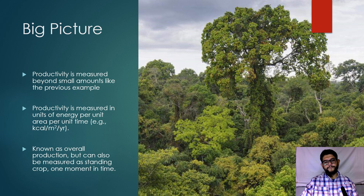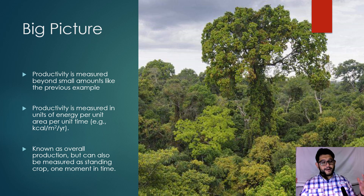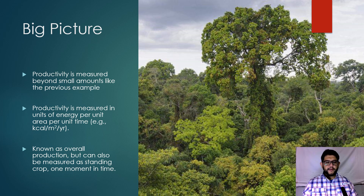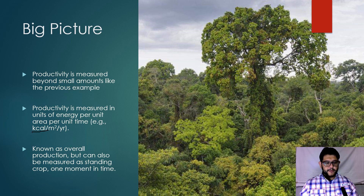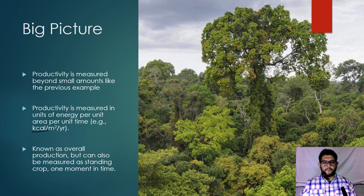What does this have to do with productivity? You can measure these small amounts in a lab and then extrapolate those calculations into the bigger picture. That's how we can figure out the productivity of an entire forest, coral reef, or seagrass bed — measured in kilocalories per meter squared per year. This is usually measured as overall production, but some scientists also look at it as the standing crop, measuring biomass at a certain moment in time.